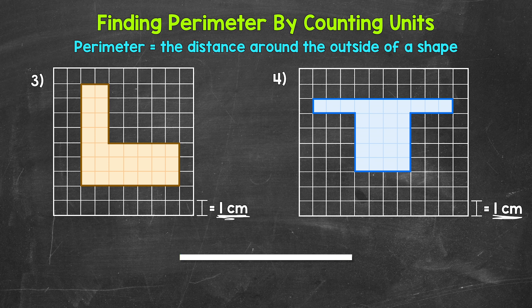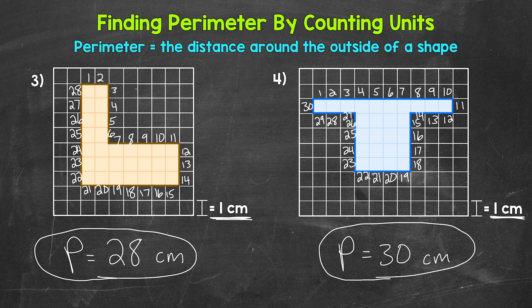Okay, so let's see what we have here for the perimeters. I'm going to put up the perimeter for number three and the perimeter for number four. So you can check your answers. For number three, the perimeter, 28 centimeters. For number four, the perimeter, 30 centimeters.